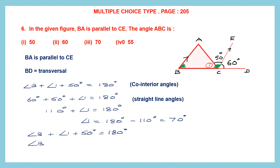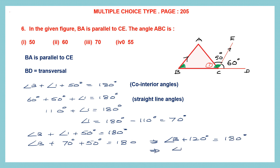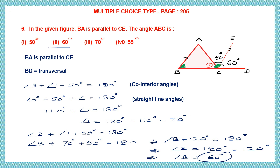Let's find the value of angle B by substituting: angle B plus angle 1 (which is 70) plus 50 equals 180 degrees. So angle B plus 120 equals 180 degrees. Therefore angle B equals 180 minus 120, which is 60 degrees. So angle B is 60 degrees — that is option 2, 60 degrees.